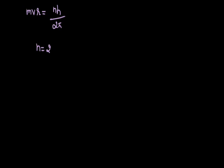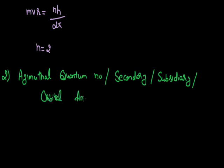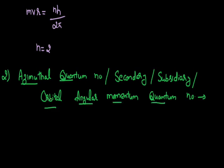Now we will move to the next quantum number, the azimuthal quantum number. This azimuthal quantum number is also known as the secondary quantum number, the subsidiary quantum number, or the orbital angular momentum quantum number. So those are the four names for this azimuthal quantum number and it can be asked with any of these names. The indication for this azimuthal quantum number is given by the symbol small l.